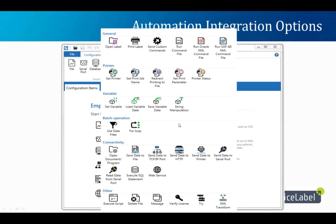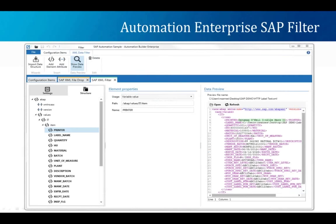We also have an external adapter for Oracle customers installed inside Oracle itself, enabling faster printing and the ability to send print job confirmations back to Oracle. We're adding more adapters for different business systems over time for tighter integration. Here's an example of the XML filter for SAP, where we can pull in the XML and match it up with the appropriate variables on your label.